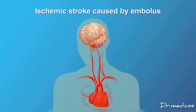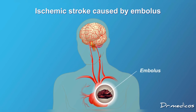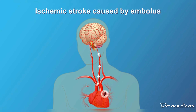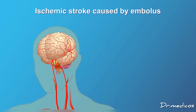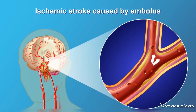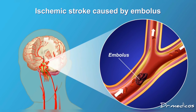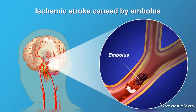In an embolic stroke, a blood clot called an embolus forms somewhere else in the body and travels via the bloodstream to the brain. Eventually the clot reaches an artery small enough to block its passage — it lodges there, obstructing the blood flow and causing a stroke.